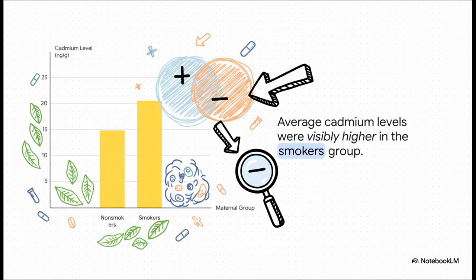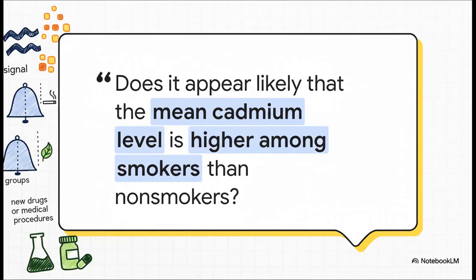But, and this is a huge but in statistics, looks can be deceiving. We need to know if this difference is statistically significant or if it's something that just could have happened by chance. The unpaired T-test is the tool that gives them the answer. By running the numbers, scientists can move from just an observation to a confident, evidence-backed conclusion about the link between smoking during pregnancy and those cadmium levels.